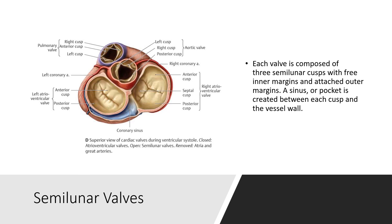The pulmonary semilunar valve is located in the pulmonary trunk, where it moderates blood flow through the right ventricular outflow channel. The aortic semilunar valve is located within the aorta immediately adjacent to the mitral valve, where it moderates blood flow through the left ventricular outflow channel. Its cusps are in the posterior, right, and left positions. The coronary arteries arise from the sinuses above the right and left cusps.